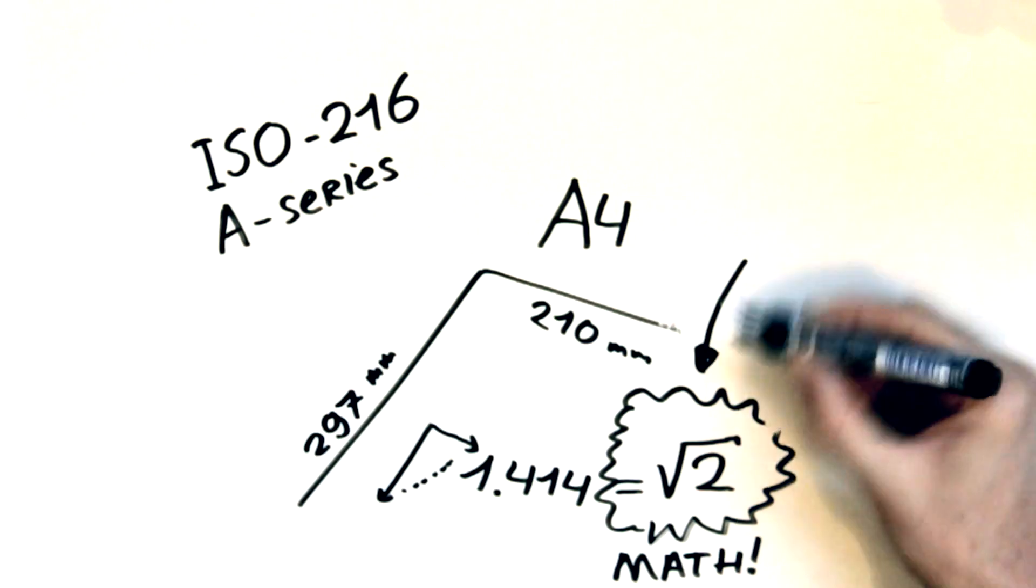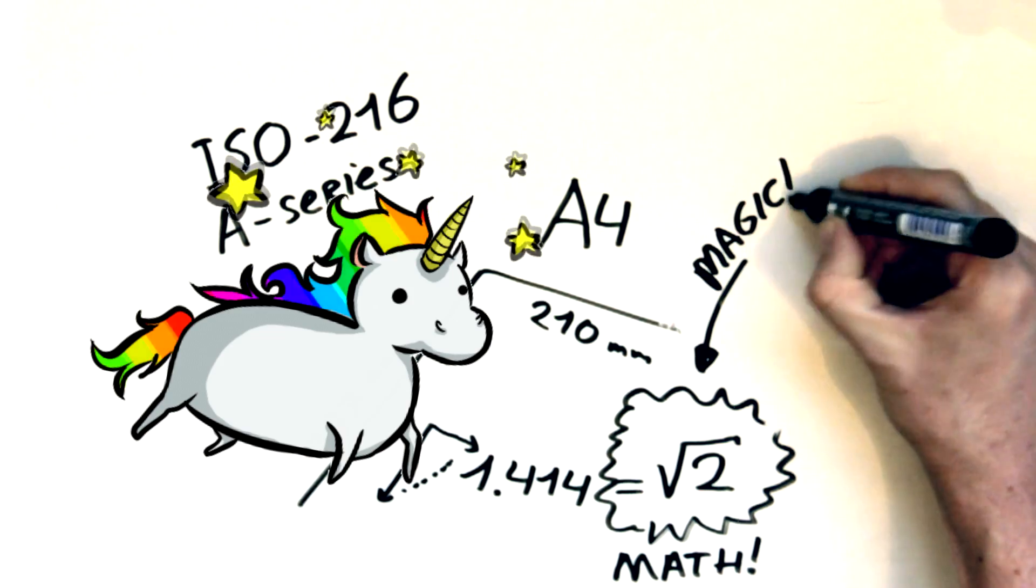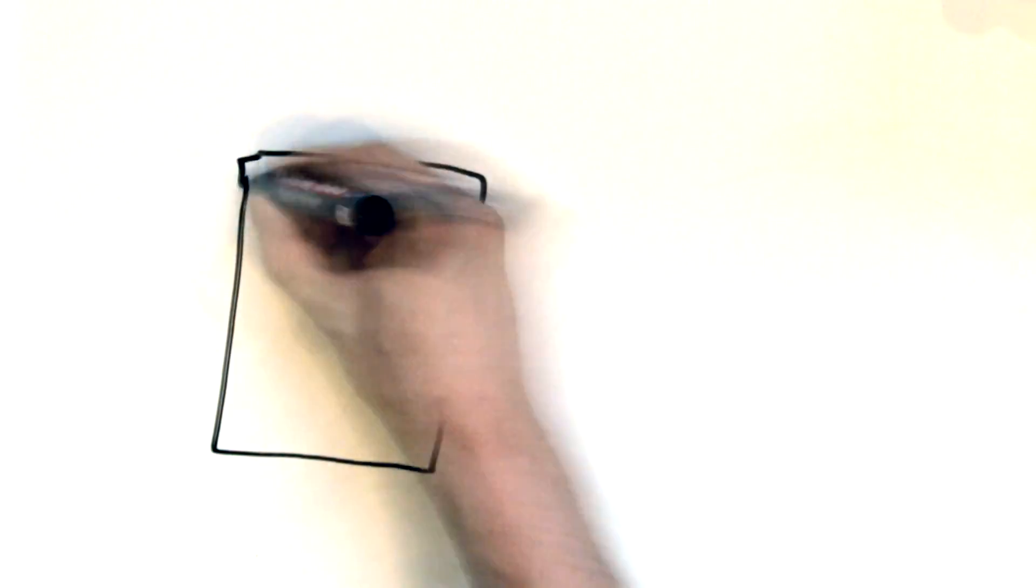The square root of 2 has a magical property that makes ISO 216 far superior over US Letter. Let me explain.